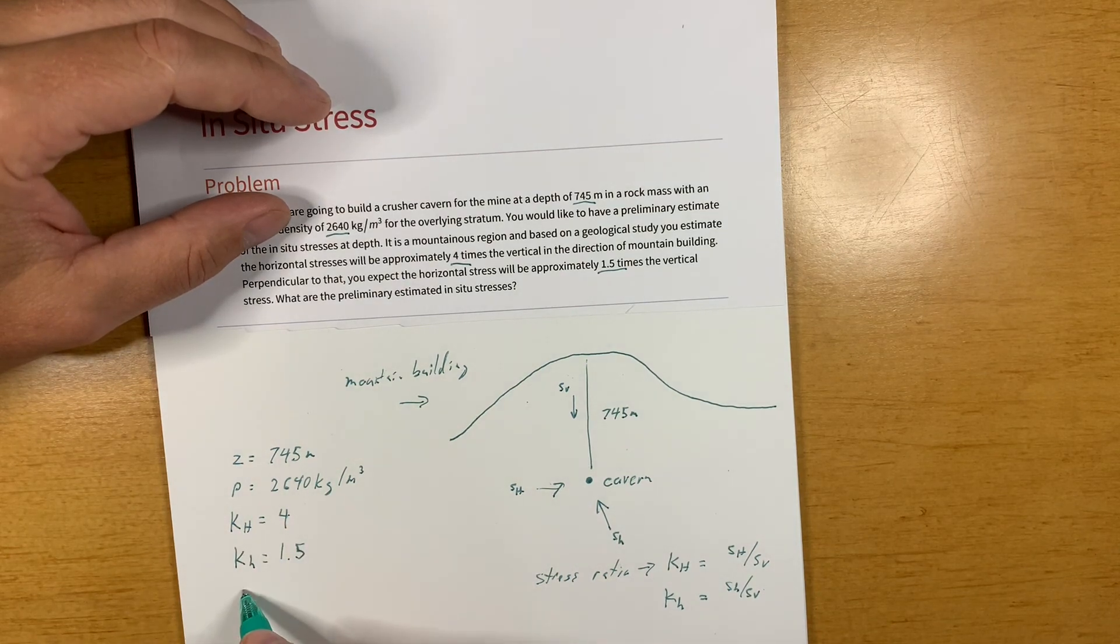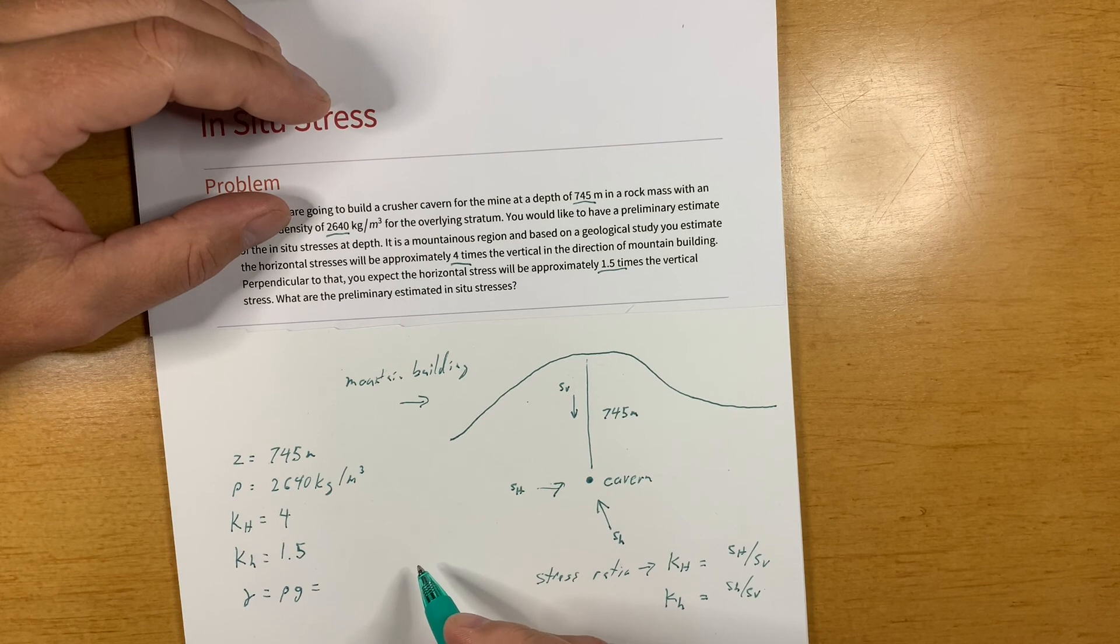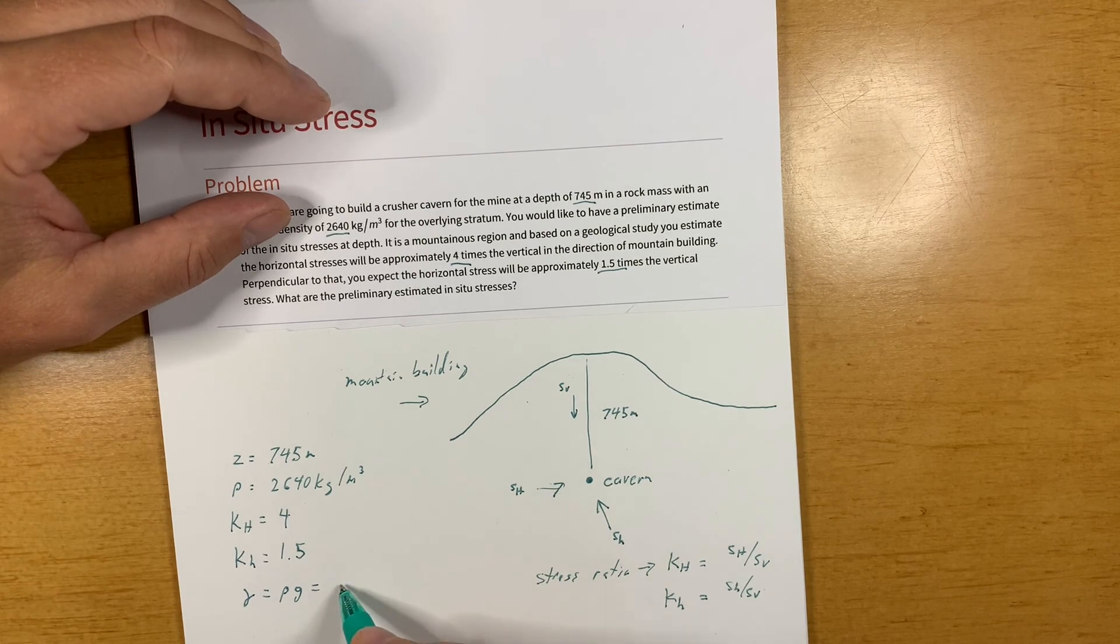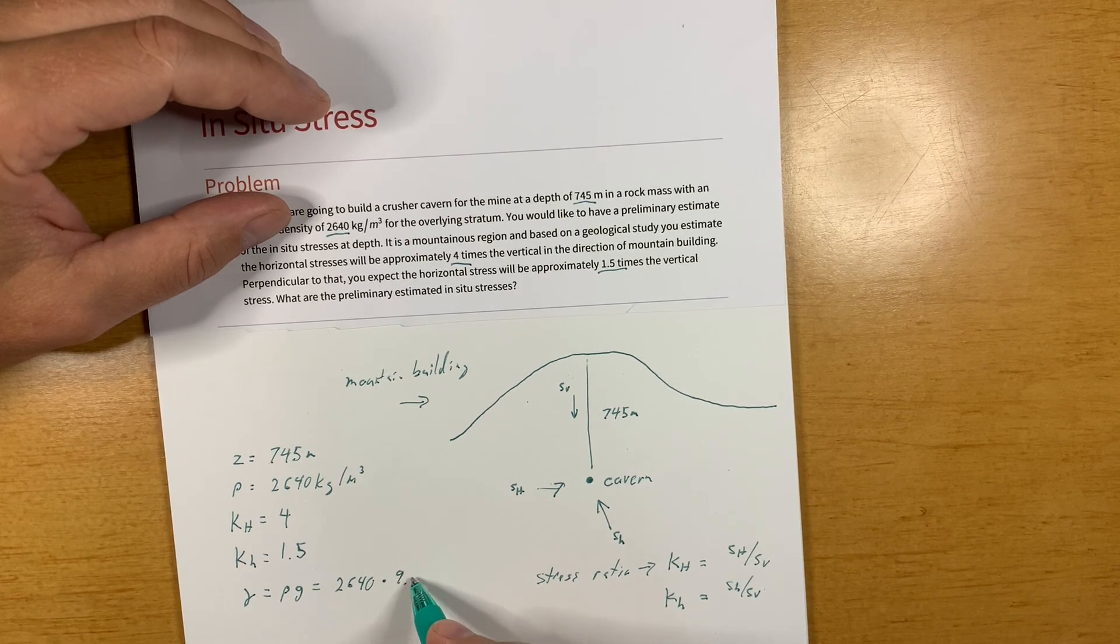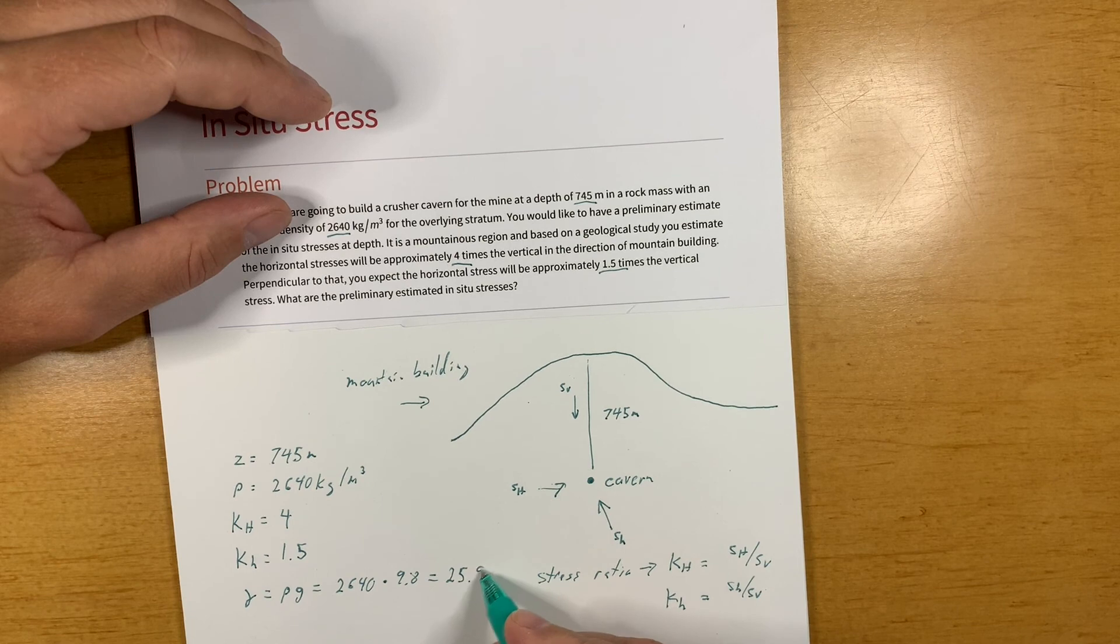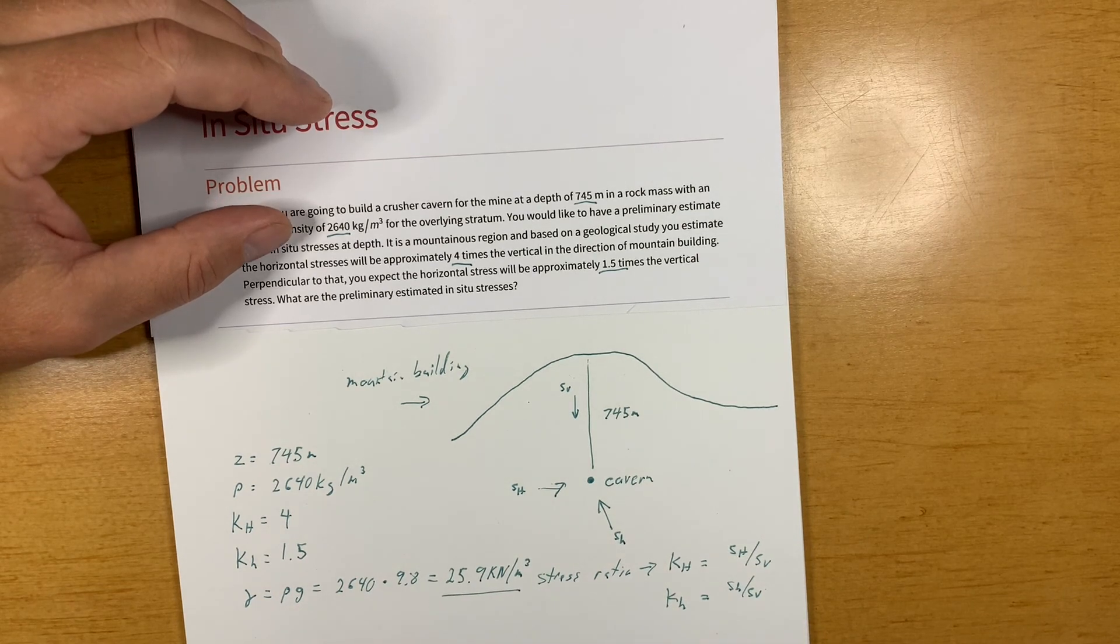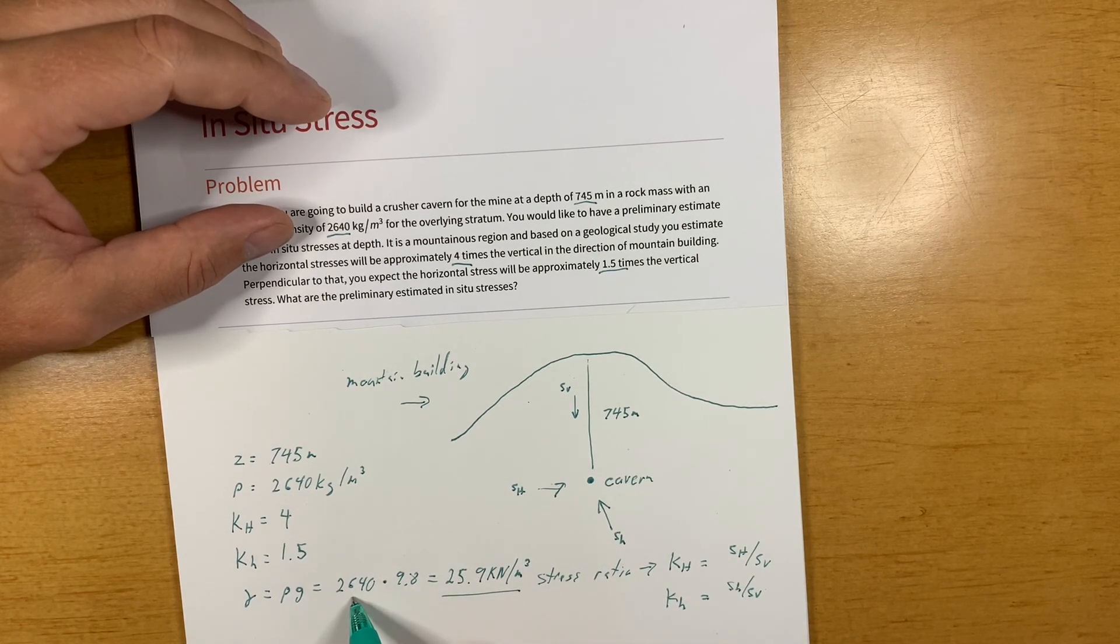We can very quickly calculate the unit weight here, which is the density times gravity, and that gives us 2640 times 9.8 and that gives us approximately 25.9 kilonewton per meter cubed. That is unit weight, and you have to divide this by a thousand for the unit correction to get that.